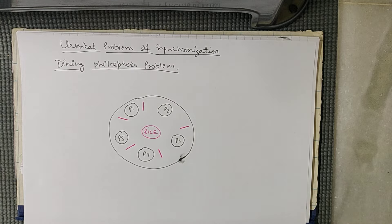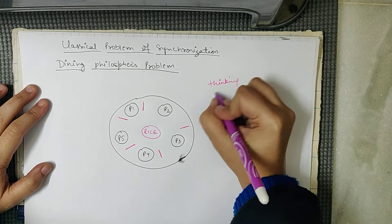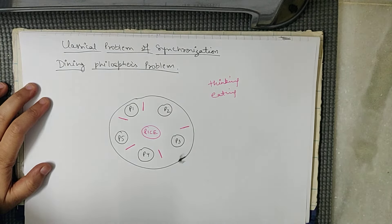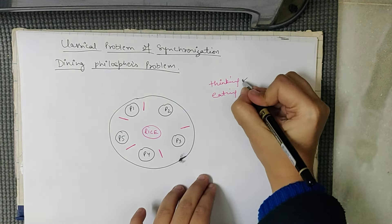Now these persons are working in two modes: either they think or they eat. Either thinking or eating, these two persons are working in the round table.